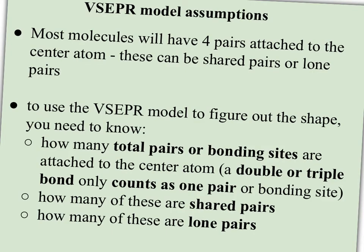So as I said, most molecules have four pairs attached to the center atom, and these can be shared pairs or lone pairs. So to use the VSEPR model to figure out the shape, you need to know how many total pairs, or what I like to think of as bonding sites, are attached to the center atom.